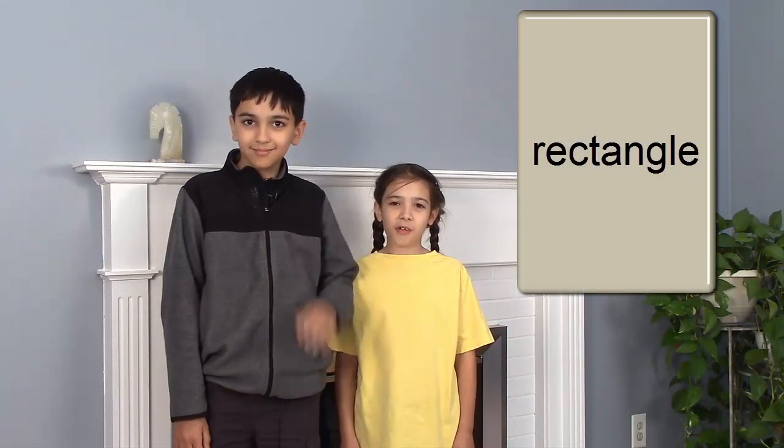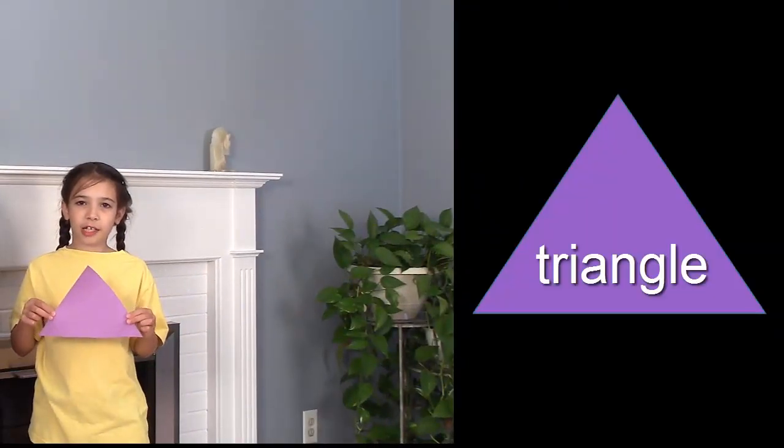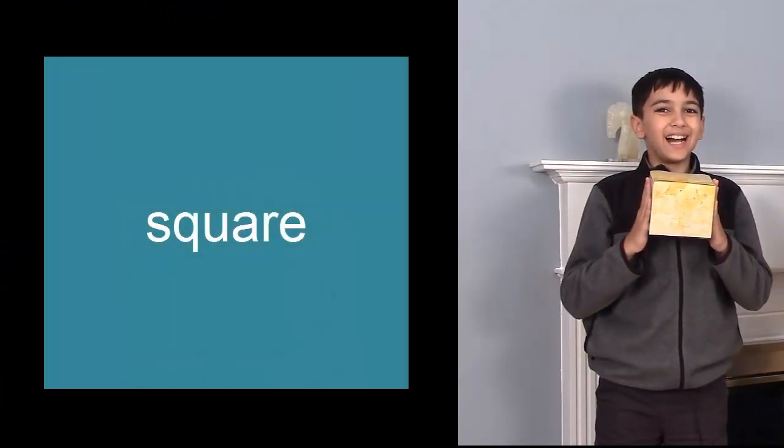Rectangles have four sides. Two are long, two are short, like this phone. Triangles have three sides. Squares have four equal sides.